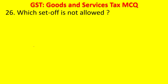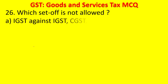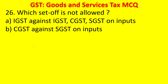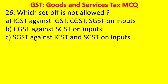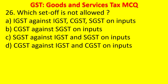Question 25: Which input tax credit set-off is not allowed under GST? Options: A. IGST against IGST, CGST, SGST on inputs; B. CGST against SGST on inputs; C. SGST against IGST and SGST on inputs; D. CGST against IGST and CGST on inputs. The answer is B — CGST against SGST on inputs is not allowed. IGST against IGST, CGST, and SGST is allowed; SGST against IGST and SGST is allowed; CGST against IGST and CGST is allowed. But CGST against SGST or SGST against CGST is not allowed.